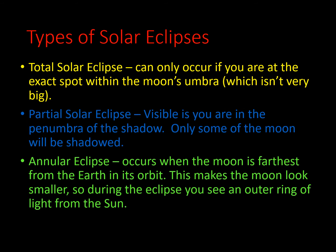There are three types of solar eclipses: total solar eclipse, partial solar eclipse, and annular eclipse. A total solar eclipse can only occur if you are at the exact spot within the moon's umbra, which is very small. A partial solar eclipse is visible if you are in the penumbra — only some of the sun will be shadowed. An annular eclipse occurs when the moon is farthest from the earth in its orbit, making the moon look smaller, so during the eclipse you see an outer ring of light from the sun.